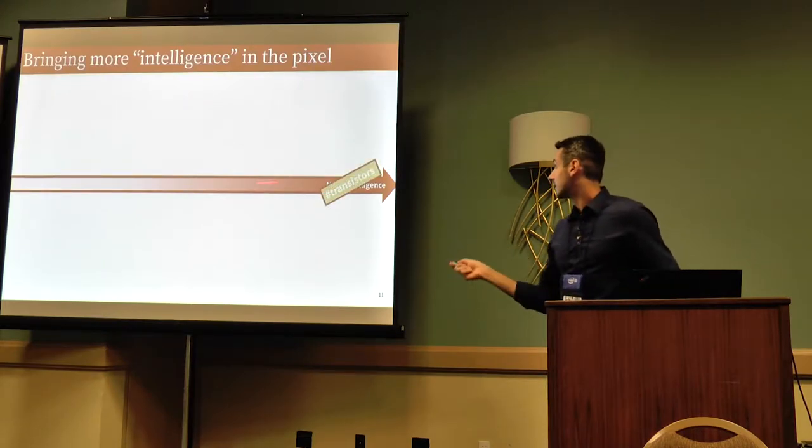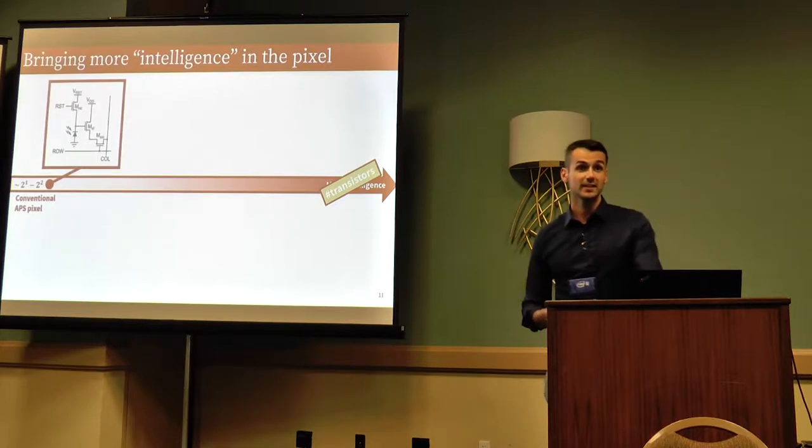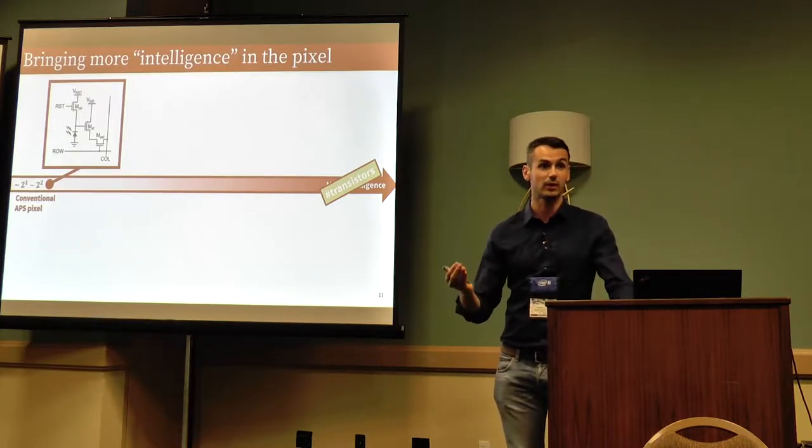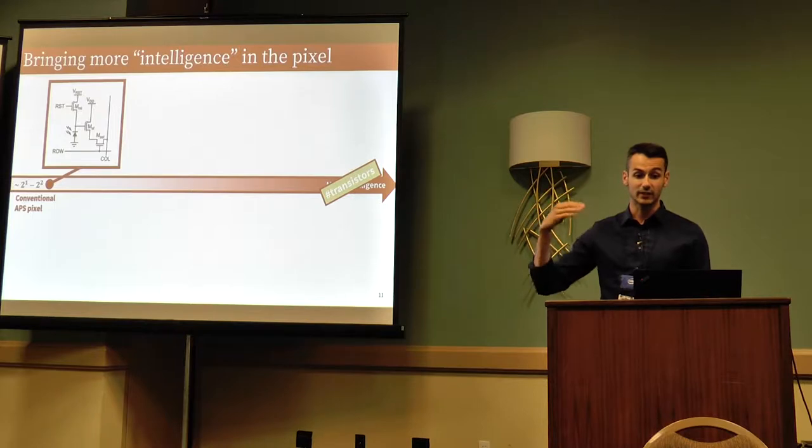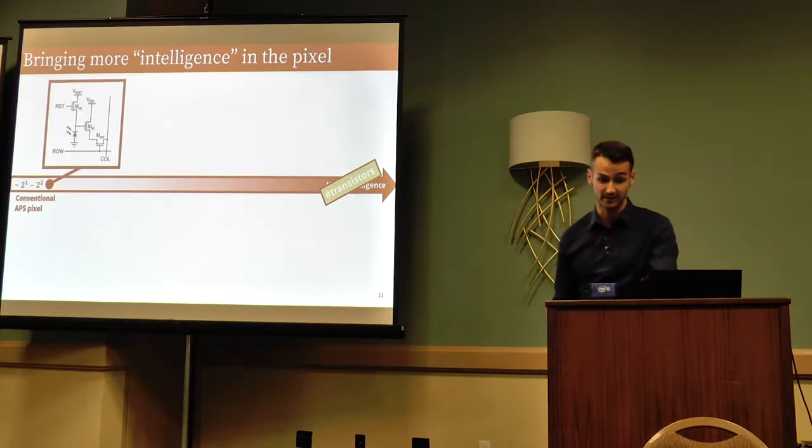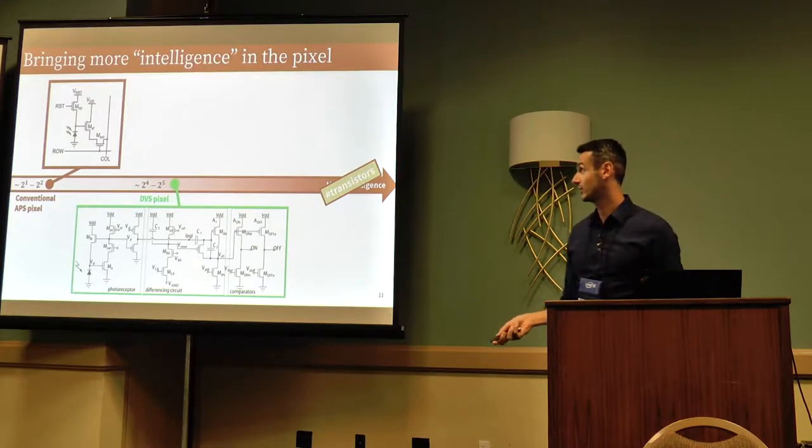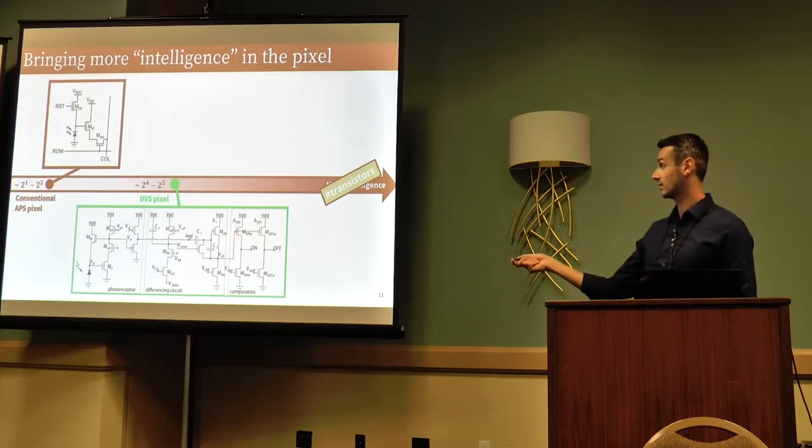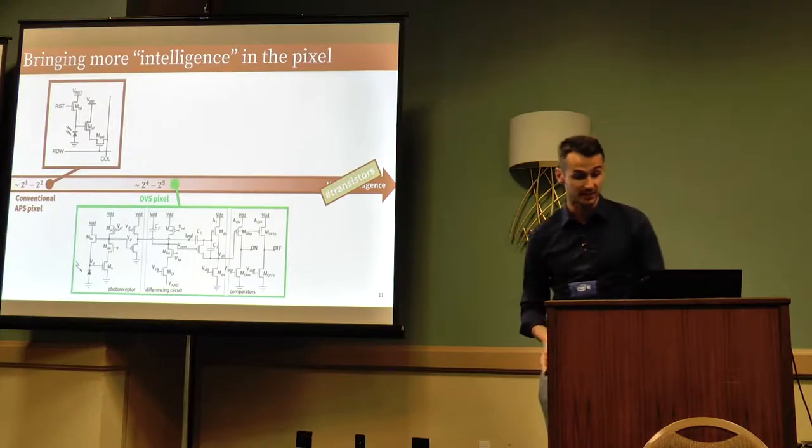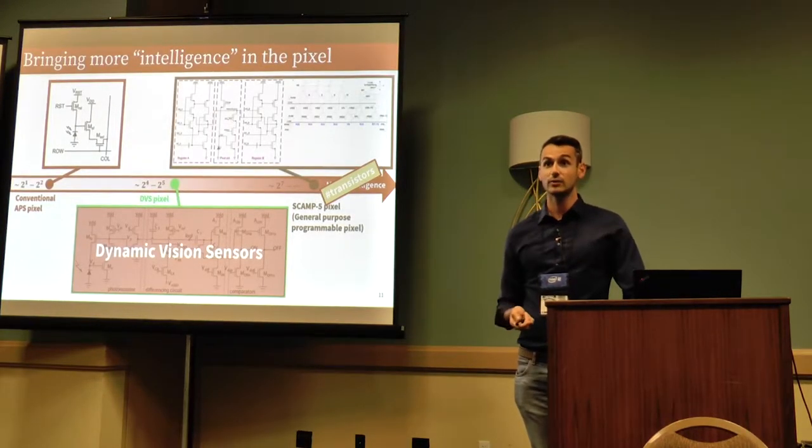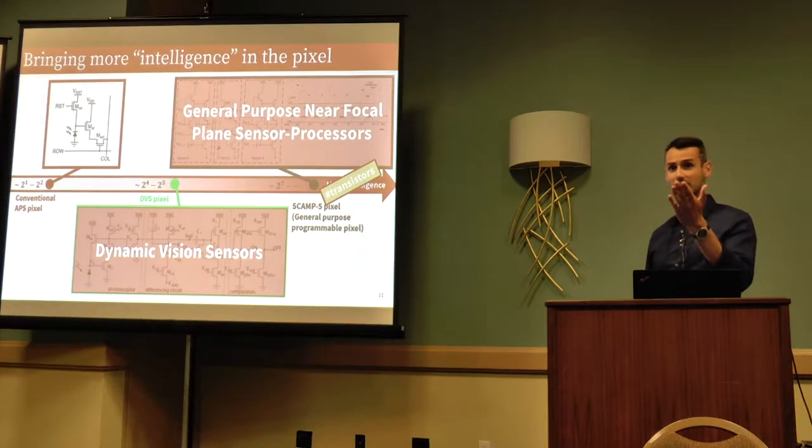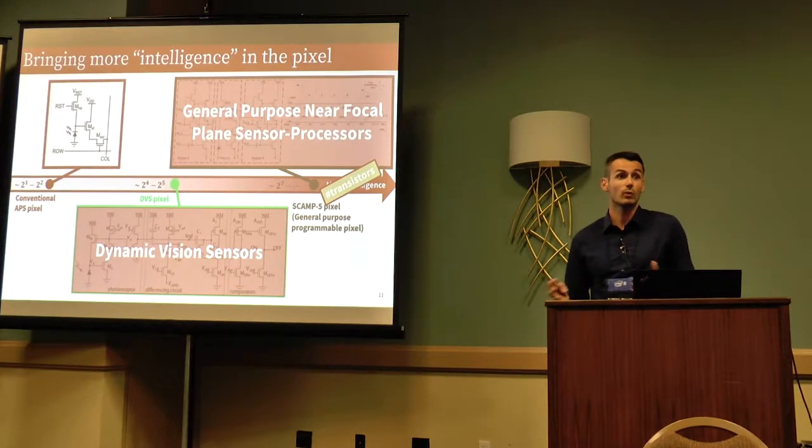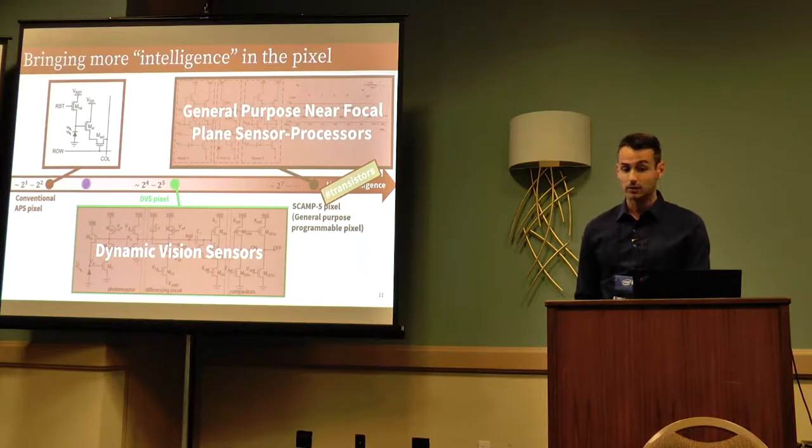So bringing more intelligence in the pixel. Let me define intelligence by the number of transistors. A few years ago, four transistors in a pixel and with three or four transistors, you're basically bound to integrate photon flux and report something that correlates to this amount of charge integrated. If you give me more transistors, about 17 to 25, 30 transistors, you can start making log photo sensor front and having some amplification, a differentiation stage, and a comparator. You get something like a DVS pixel. Give me even more. About 150 transistors. You have a pixel which is generally programmable. You can do whatever you want in your pixel. But what do we want in this pixel? That's the question I'm going to ask.